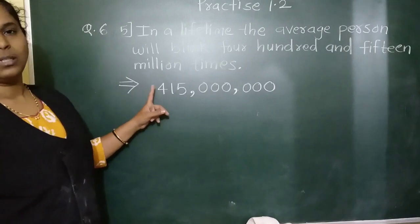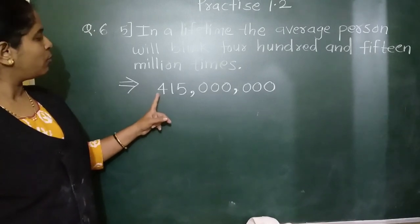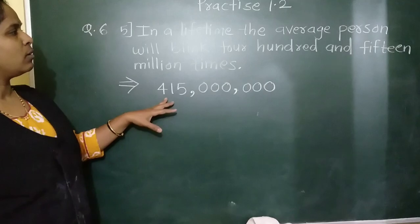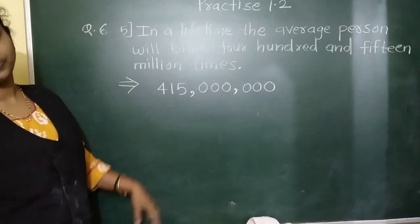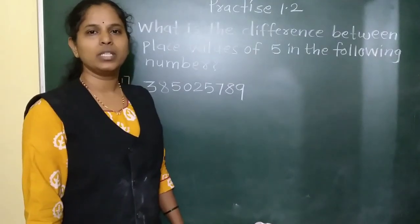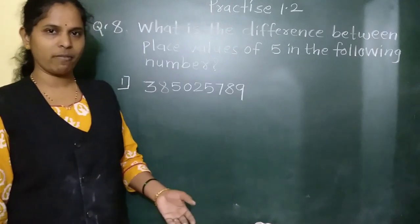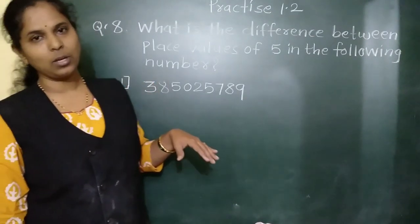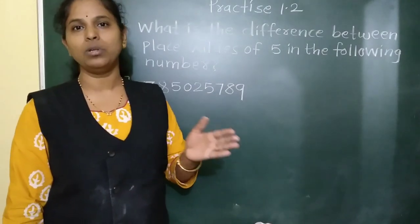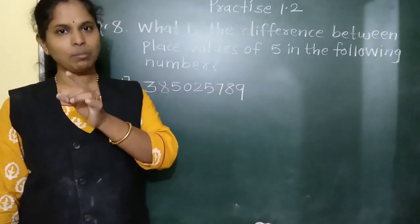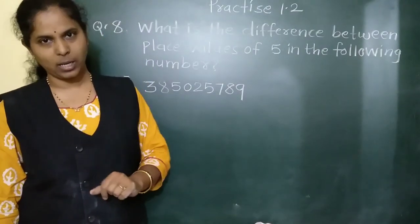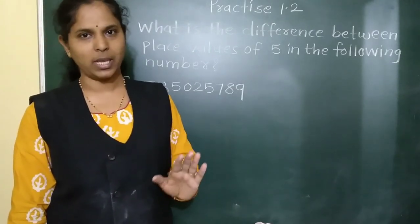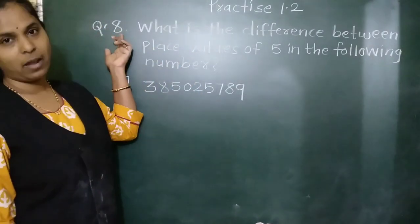So in one life, a person blinks 415,000,000 times. Question number 7 is the same as question number 6 — you will have to write the given numbers in numerical form. That you will have to do by yourself. Now, question number 8 I will show.